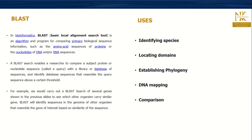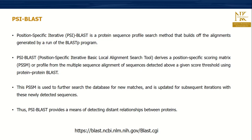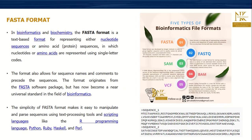BLAST stands for Basic Local Alignment Search Tool. It is used for identifying species, locating domains, establishing phylogeny, mapping DNA, and comparing between sequences. It is a very useful tool for any genomics scientist. We also have PSI-BLAST, and there are different types of BLAST tools available.